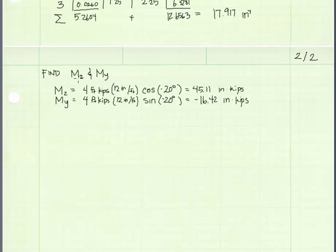We found the components of our moments about the z and y axis. Notice that I took 4 foot kips and I multiplied it by 12 inches per foot to convert the units into inch kips. This will be useful because I want my stress to work out in units of KSI, so I need to get rid of the feet here. And for the z,